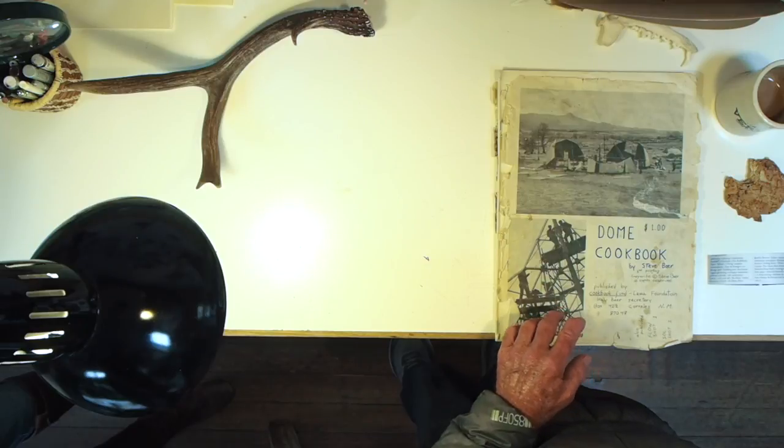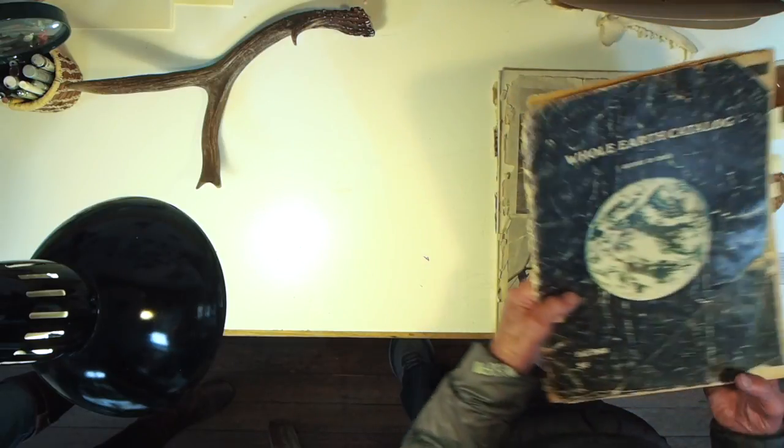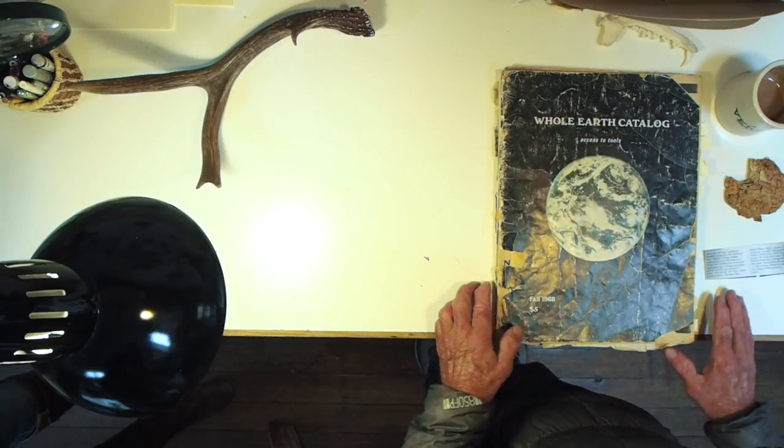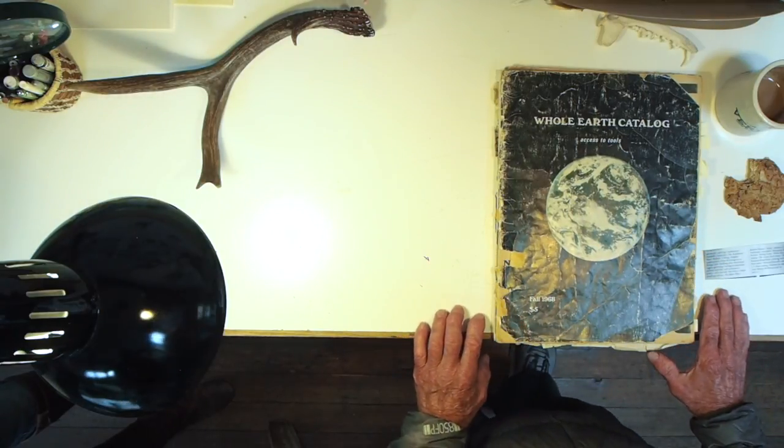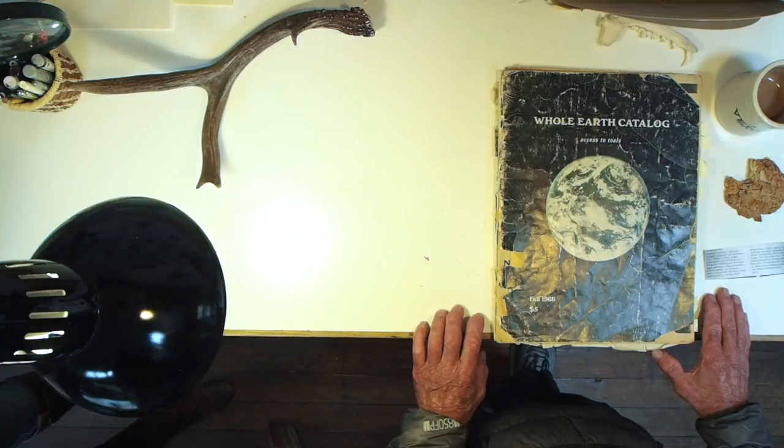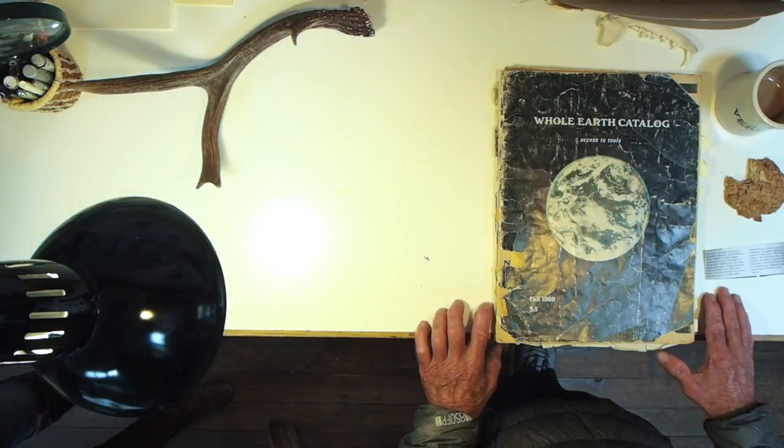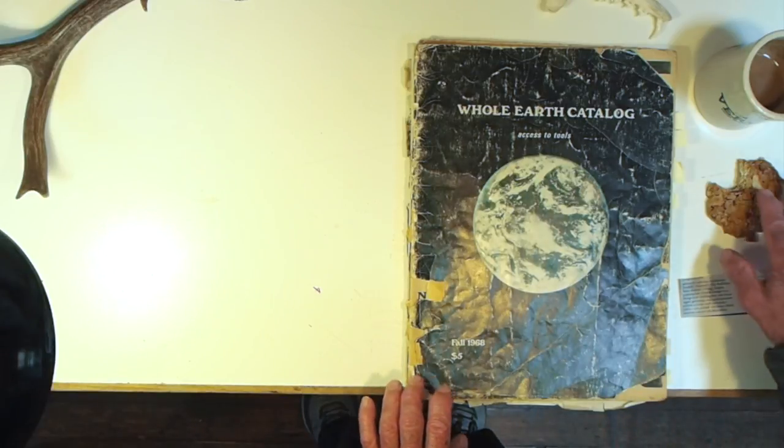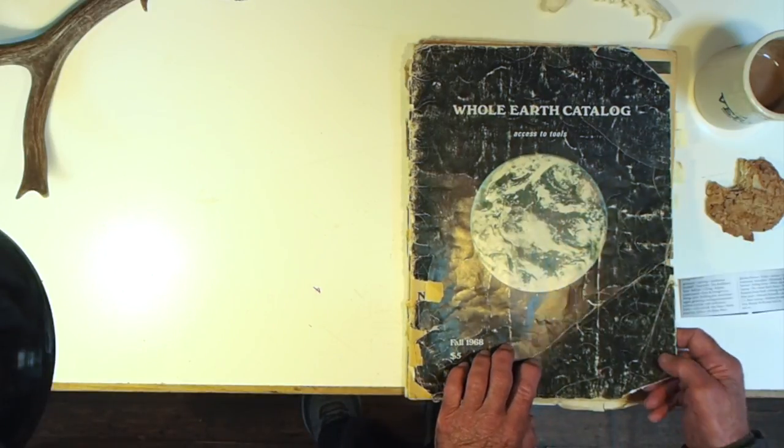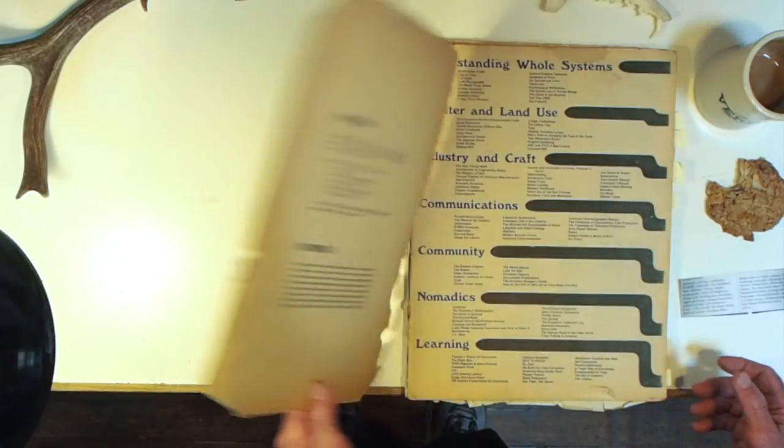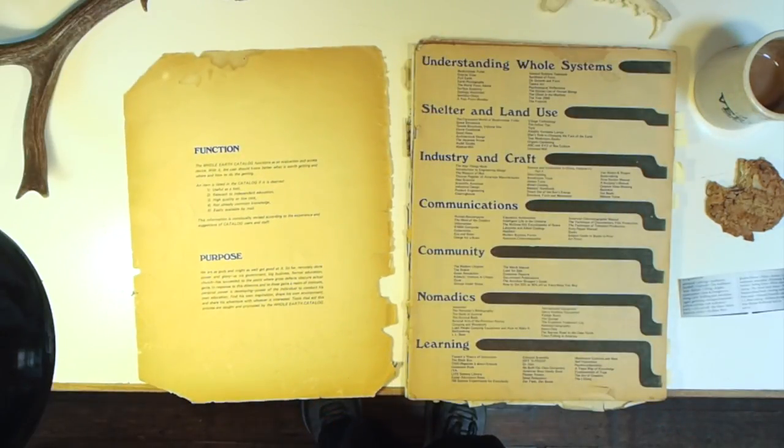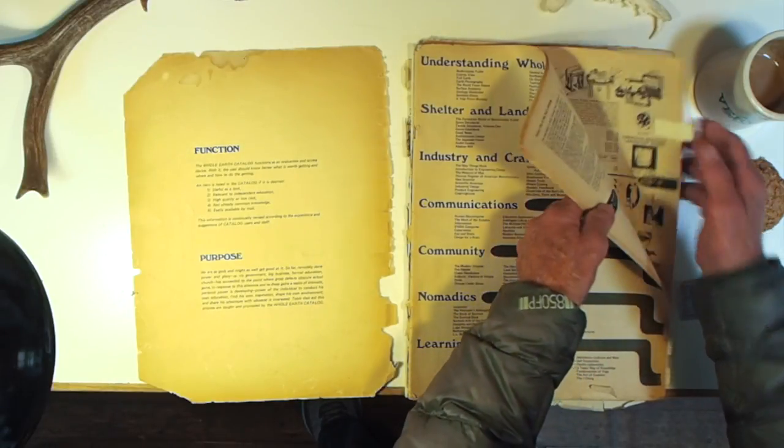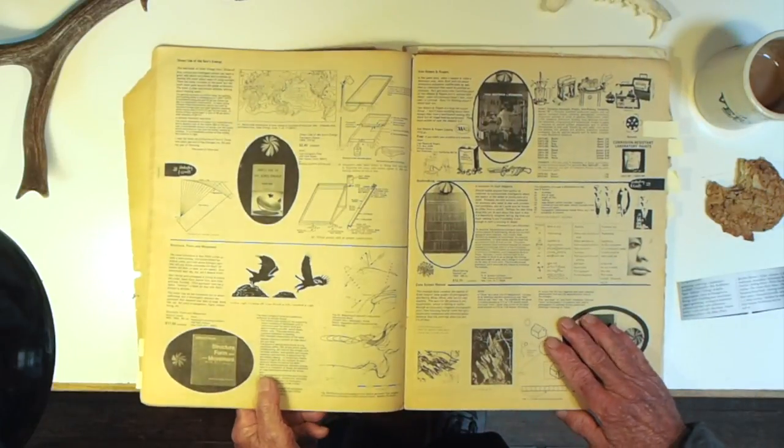Maybe six months later, I met Stuart Brand, and I realized that Stuart was much farther along in getting all this information together. And so Stuart came out with the Whole Earth Catalog in 1968. It cost $5. It was 64 pages. It was done on a newspaper press, and it combined many of the things that everybody was interested in back in the 60s. So here's some of the pages.